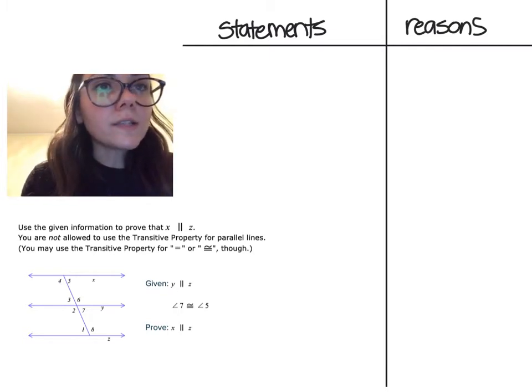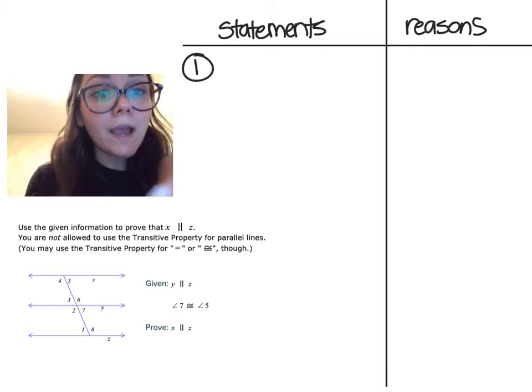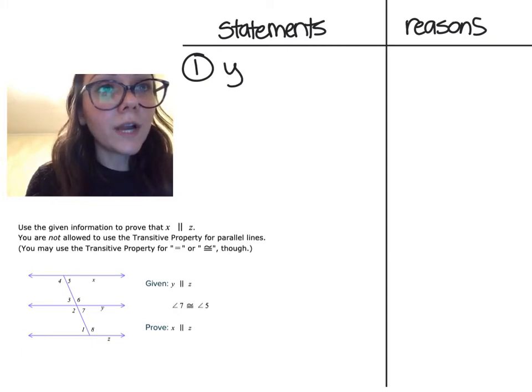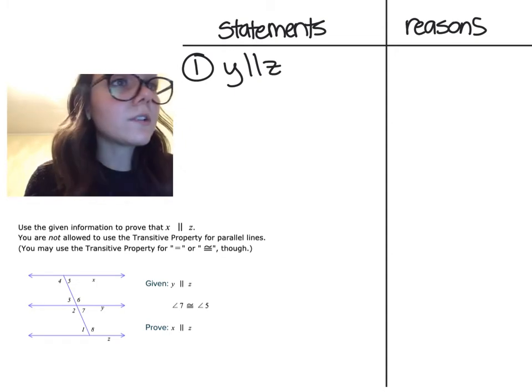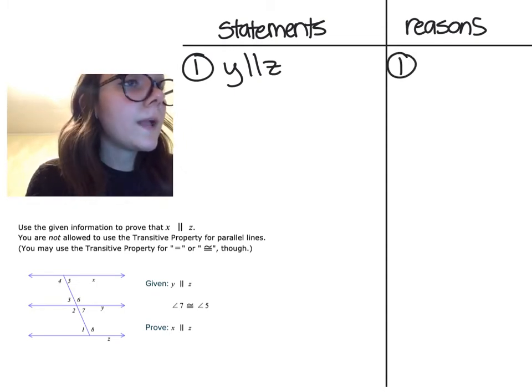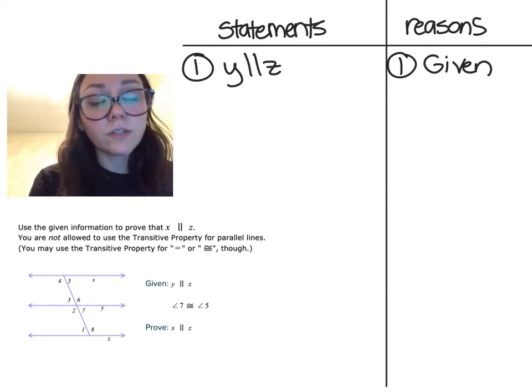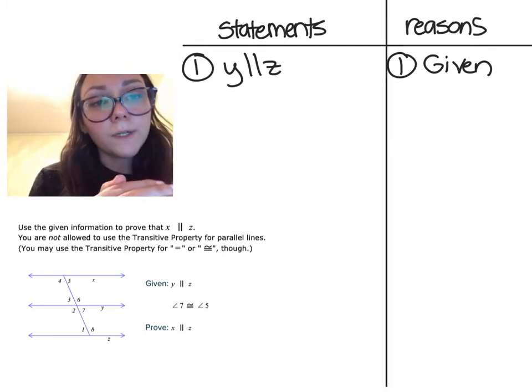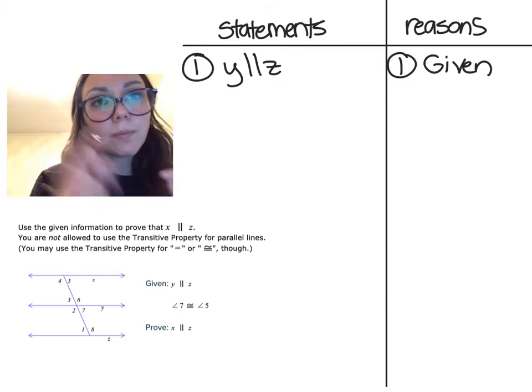You, as the proof writer, have a little bit of creative rights in terms of the exact order of your proof. Sometimes there's more than one way to reach your final destination. For instance, you can write both of your given statements in consecutive order. I'm going to choose to separate them this time.